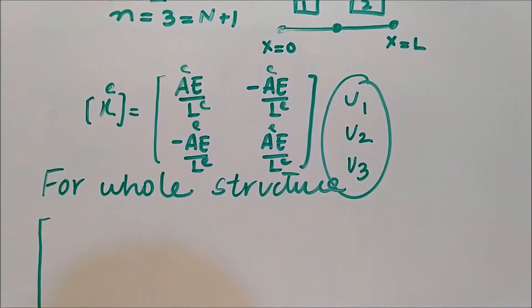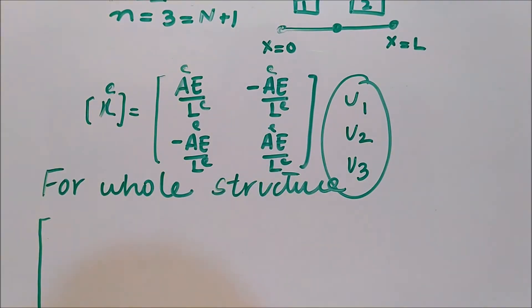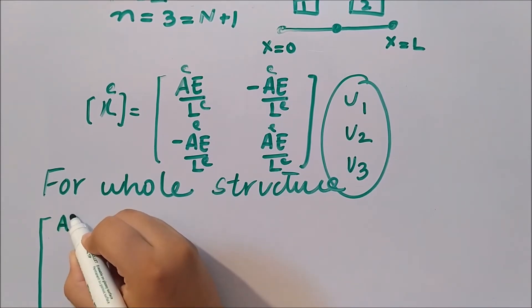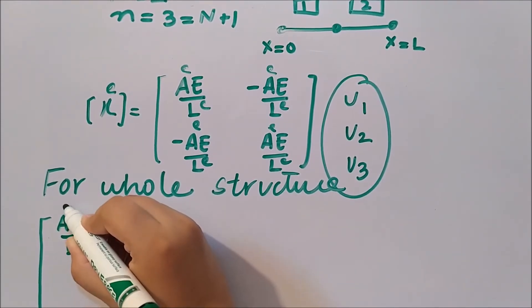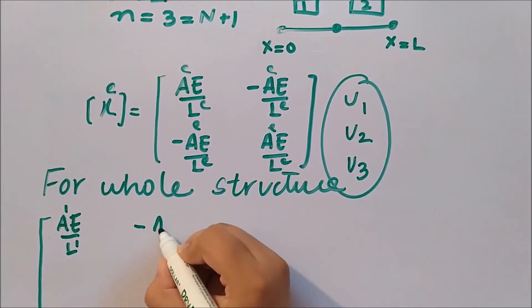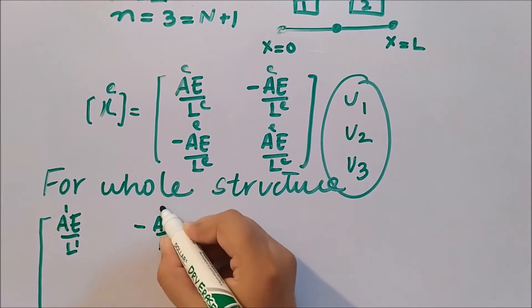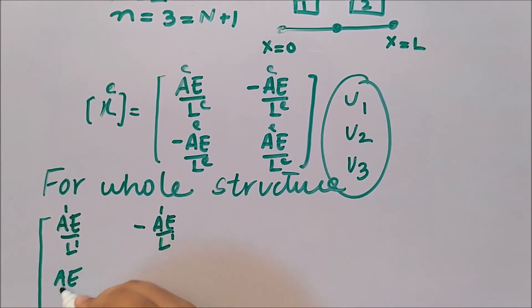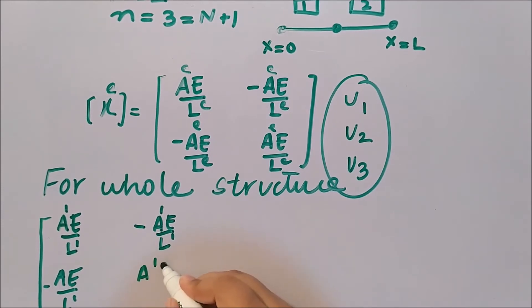For the first element, e equals 1. We write the values AE/L and -AE/L for the first element in the stiffness matrix.